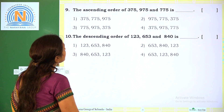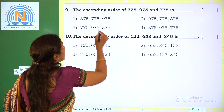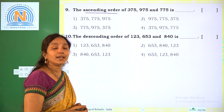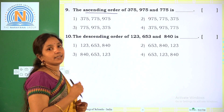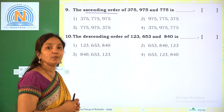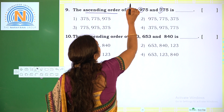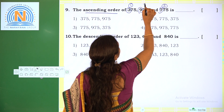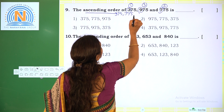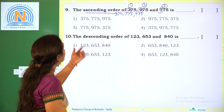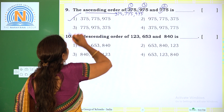Next: the ascending order of 375, 975, and 775. Ascending order means numbers arranged from smallest to greatest. All are 3-digit numbers, so we check the hundreds place: 3, 9, and 7. The smallest is 3, so 375 comes first. Then 7, so 775 comes second. Then 9, so 975 comes third. The ascending order is 375, 775, 975. The required option is 1.